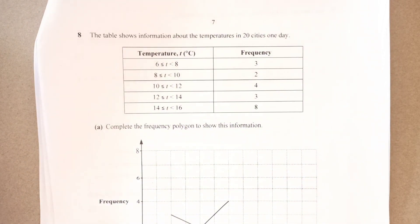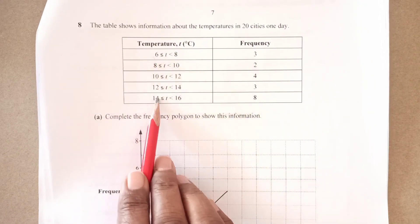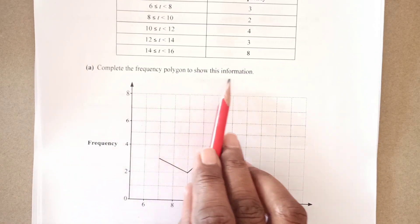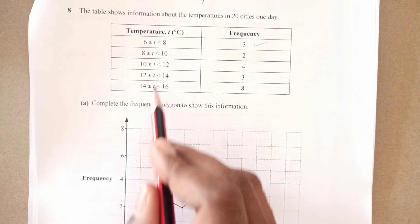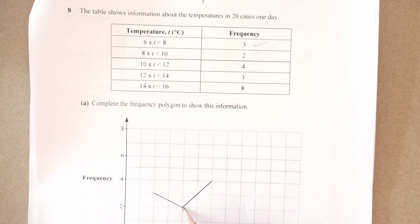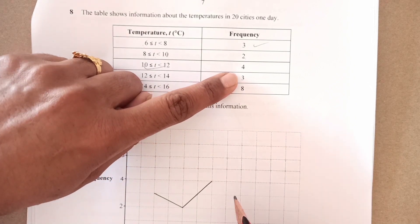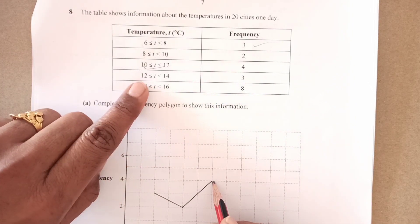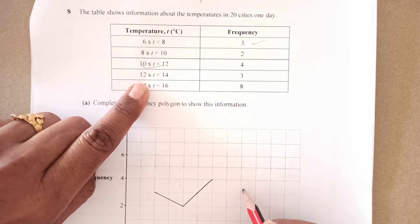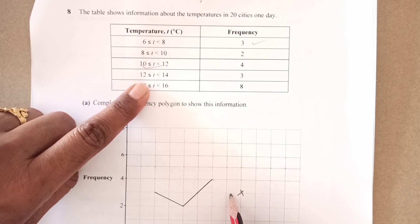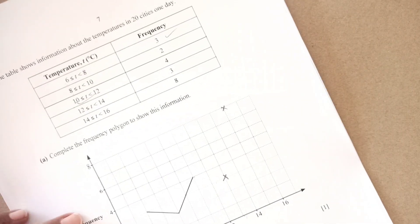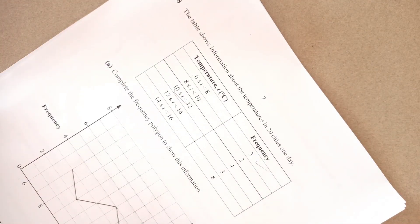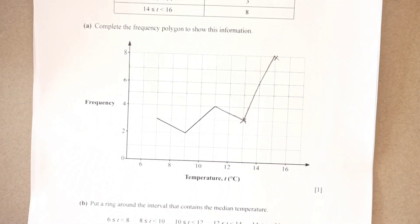Number 8. The table shows information about the temperature in 20 cities 1 day. This is the temperature and this is the frequency. Complete the frequency polygon to show the information. The first one between 6 to 8 is 3 here. Then 8 to 10 in the middle one is 2 which is 2 here. 10 to 12 we have here 4 which is already here. Next one 12 to 14 which is 13 here which is 3. 3 is going to come over here. Then 14 to 16 is 8. 8 is here. You need to use your ruler to draw this line. That is it.